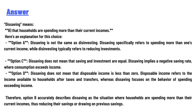Option C is incorrect — dissaving does not mean that saving and investing are equal. Dissaving implies a negative savings rate where consumption exceeds income. Option D is also incorrect — dissaving does not mean that disposable income is less than zero. Disposable income refers to the income available to households after taxes and transfers.